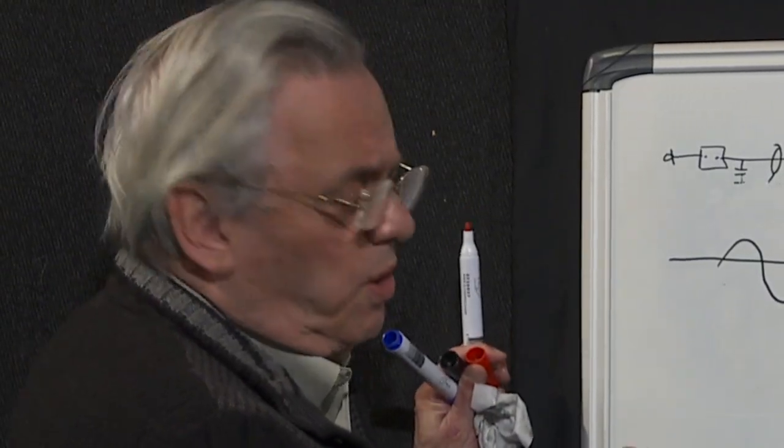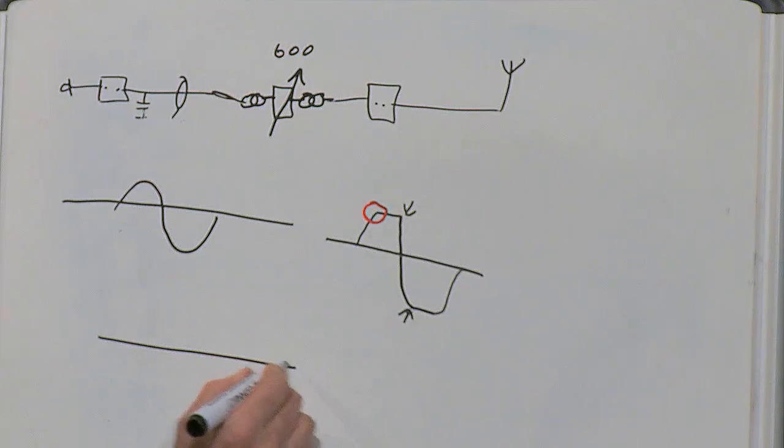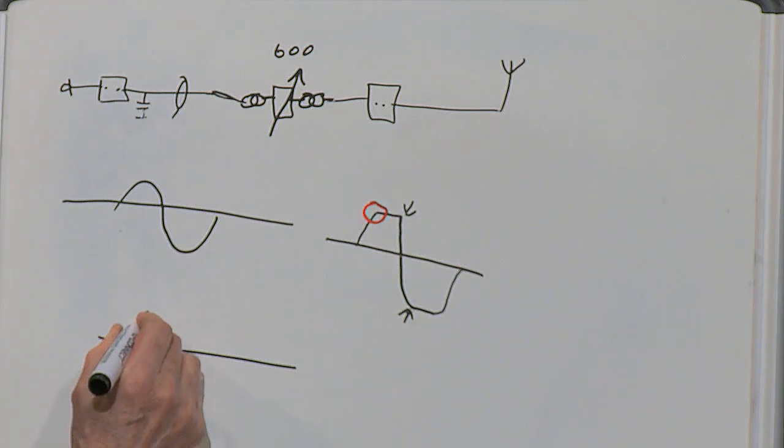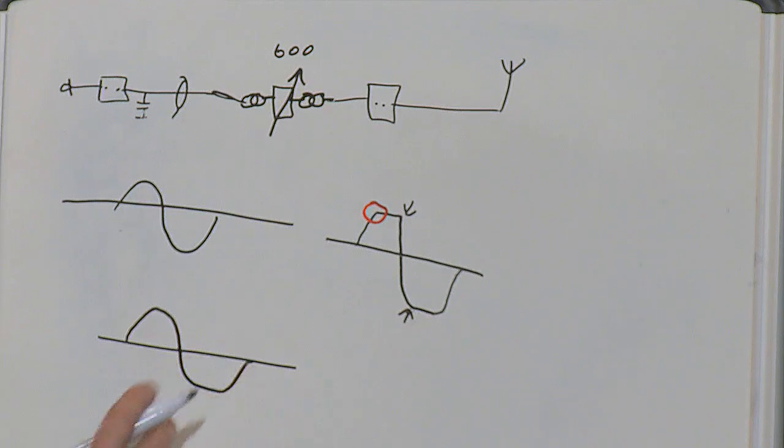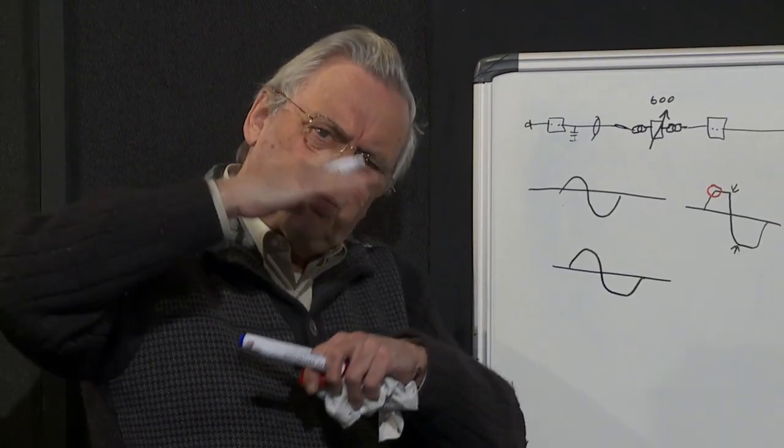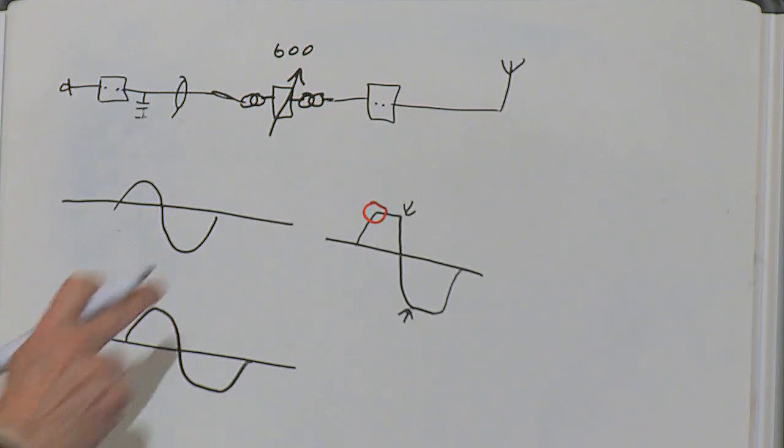The great thing about a transformer when it distorts is it sort of does this. In other words, it sort of gets compressed a bit, and you don't get these edges. Another reason for using transformers.